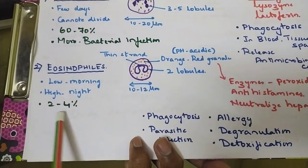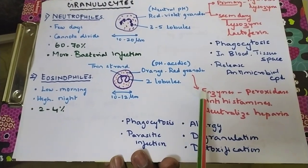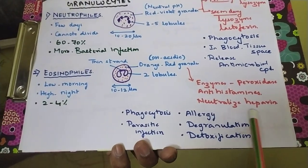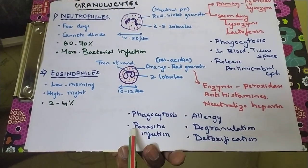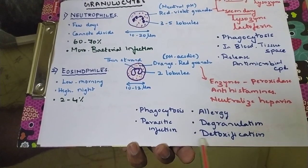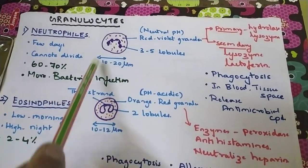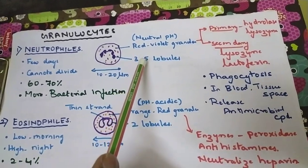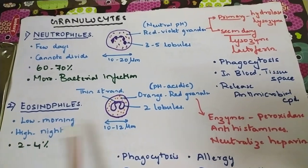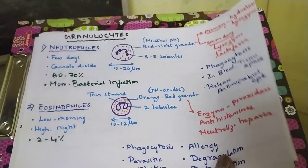Eosinophils increase during allergy. Their orange-red granules contain enzymes with peroxidase and anti-histamines, and they also neutralize heparin. They help in phagocytosis and are found more during parasitic infection and allergy. They help in degranulation and detoxification. Please remember the differences: neutrophils have 3 to 5 lobes and are larger; eosinophils have only 2 lobes connected by a thin strand, and the color difference also helps distinguish them.